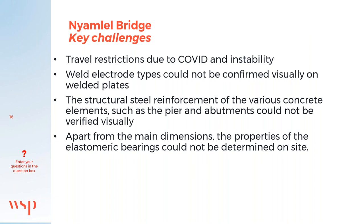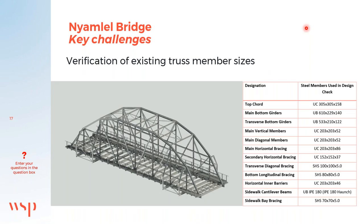Another key challenge was the verification of existing truss member sizes. The first site visit did not confirm these sizes, and there were no as-built drawings available for the design team. So on the second site visit during the bridge inspection, each and every structural steel element was measured out, and the dimensions are shown in the table on the right.